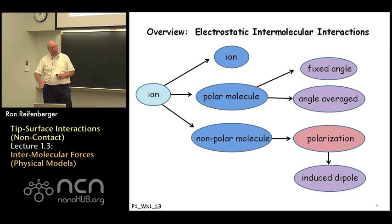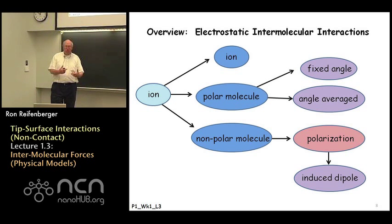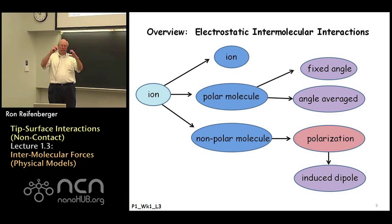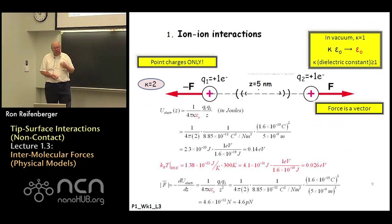So in terms of a broad overview of what we're going to consider, we're basically going to try to systematically work through all the possible electrostatic interactions that can take place and we're going to try to rank them in terms of strength — which is the strongest interaction and which is the weakest. The first set of interactions is basically one ion interacting with another ion, with a polar molecule, or with a non-polar molecule. Let's start with the ion-ion interaction — this is the simplest case.